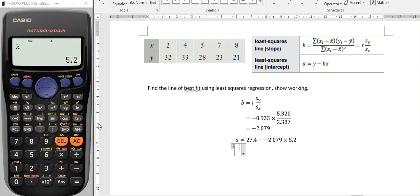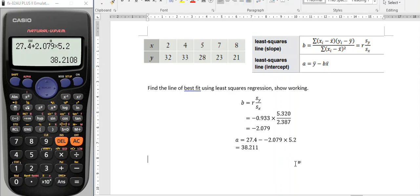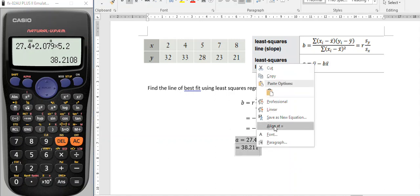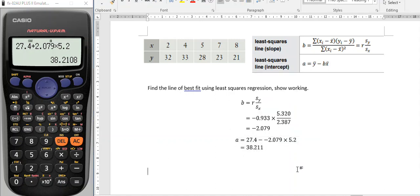And so, 27.4, now minus a negative is the same as plus, 2.079 times 5.2, 38.21. 2.11 if I round. And I'll just make that look a little neater. And that's it.